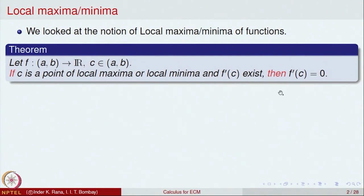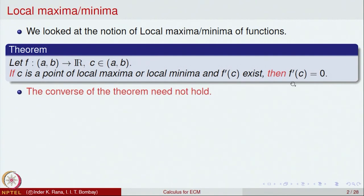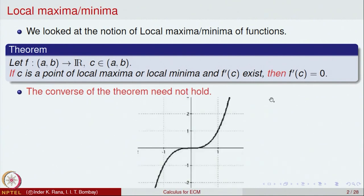Geometrically, that meant the tangent must be horizontal. We also pointed out that the converse of this theorem need not hold, namely the derivative equal to 0 at a point need not imply the function has a local maxima or minima. We had given some examples - here is the graph of f(x) = x³. At 0 the x-axis is the tangent to this curve y = x³, but at this point there is no maxima or minima. So the converse of this theorem need not be true.